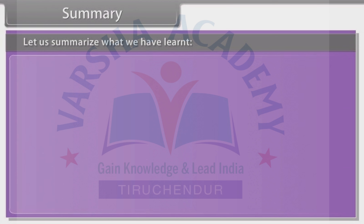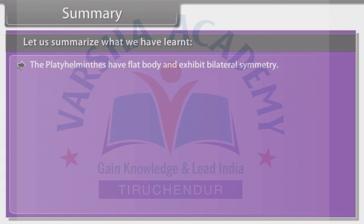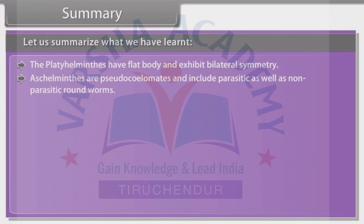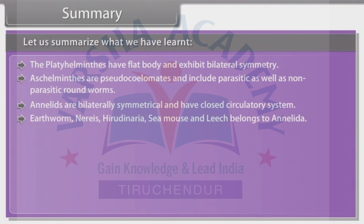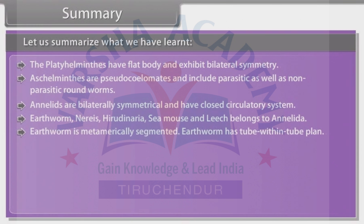Let us summarize what we have learned. The Platyhelminthes have a flat body and exhibit bilateral symmetry. Aschelminthes are pseudocoelomates and include parasitic as well as non-parasitic roundworms. Annelids are bilaterally symmetrical and have a closed circulatory system. Nereis, Hirudinaria, sea mouse and leech belong to Annelida. Earthworm is metamerically segmented and has a tube-within-tube body plan.